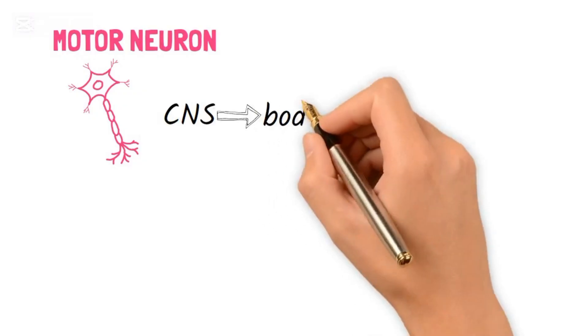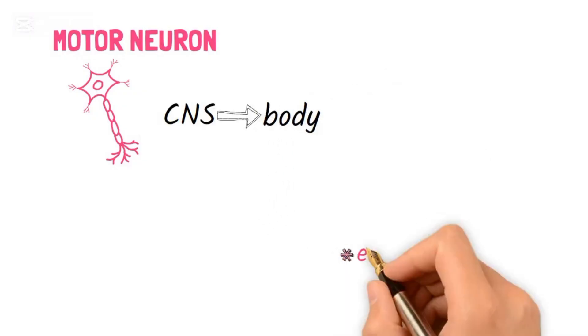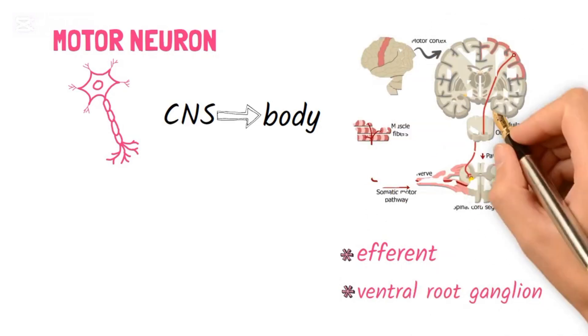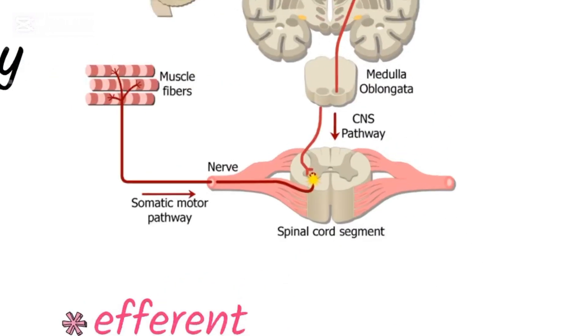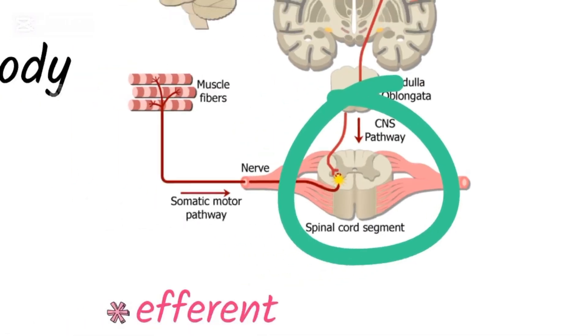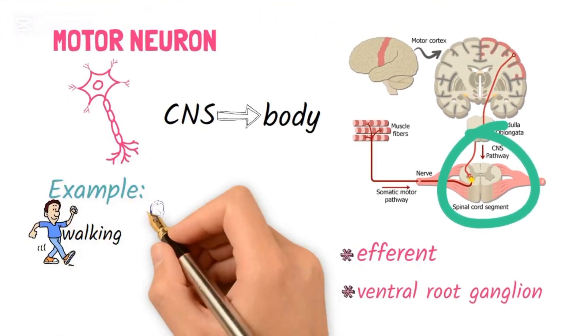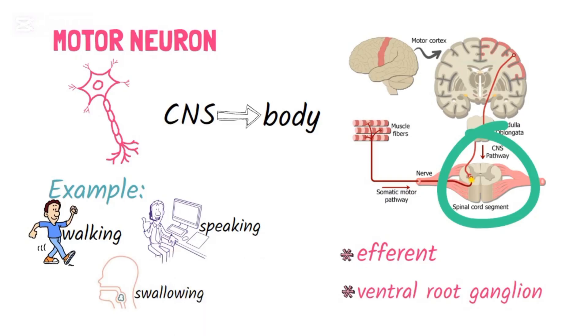Motor Neurons carry signals from the central nervous system to the rest of the body. These are efferent neurons and contain ventral root ganglia, which carry instructions from the brain and spinal cord to control muscular contraction. Examples include walking, speaking, and swallowing.